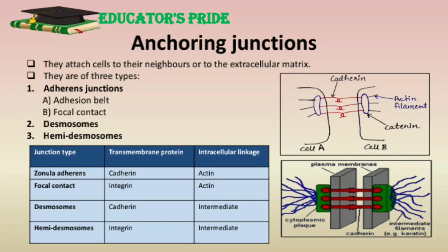Desmosomes are button-like points of intercellular contact which bind neighboring cells together. They mediate the interaction via cadherin family proteins and intermediate filaments. Desmosomes contain two specialized cadherin proteins: desmoglein and desmocollin. Hemidesmosomes, or half-desmosomes, resemble desmosomes but connect the basal surface of epithelial cells to the underlying basal lamina. The transmembrane proteins in hemidesmosomes belong to the integrin family and are associated with intermediate filaments.